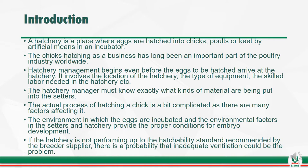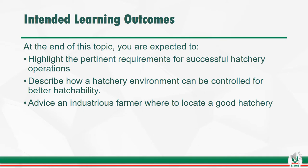If the hatchery is not performing up to the hatchability standard recommended by the breeder supplier, there is a probability that inadequate ventilation could be the problem. Today we have three intended learning outcomes: you should be able to highlight the pertinent requirements for successful hatchery operations, describe how a hatchery environment can be controlled for better hatchability, and advise an industrial farmer where to locate a good hatchery.